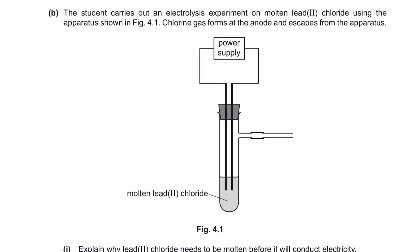Next, question B. The student carries out an electrolysis experiment on molten lead chloride using the apparatus shown in figure 4.1. Chlorine gas forms at the anode and escapes from the apparatus. So the chlorine gas escapes here. This is your setup and we are using molten lead chloride as the electrolyte. Molten means that there is no presence of water, so no H+ or OH- ions. Let's first identify what ions are present in the electrolyte. You've got Pb2+ and Cl-.